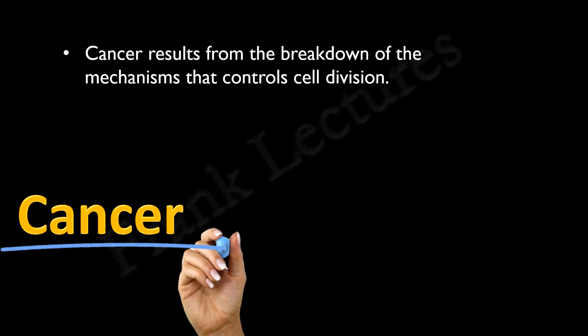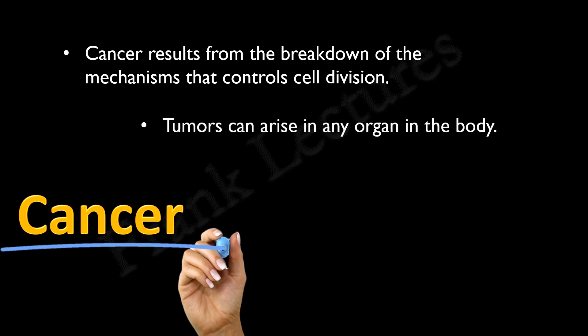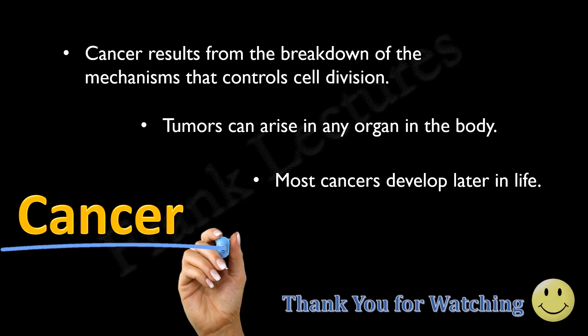So in this video lecture, we understood that cancer results from the breakdown of the mechanisms that control cell division. Tumors can arise in any organ in the body. Since cancer requires accumulation of mutations to manifest itself, most cancers develop later in life. This is because it takes many years for a cell to accumulate the multiple mutations required. That's all in today's lecture. Thank you for watching.